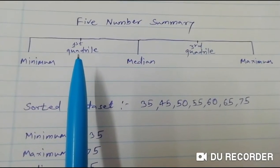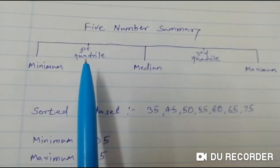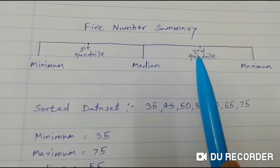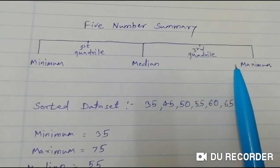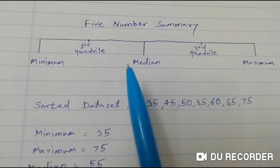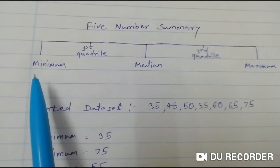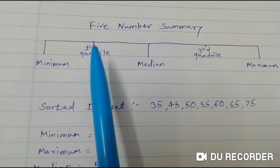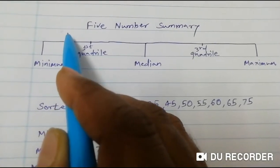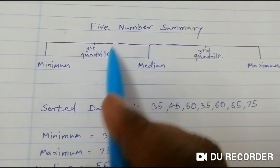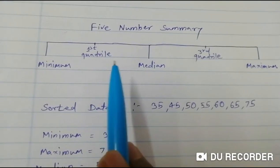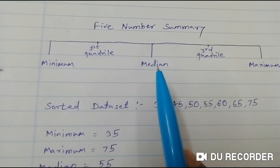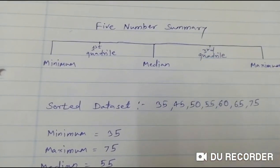The first quartile is nothing but the median of the minimum and median portions of the data. The third quartile is the median of the median and maximum portions. Our total data set is divided by the median into two 50% parts. Each 50% part is again divided, giving us 25% parts. So we calculate the median of the lower half for Q1, and the median of the upper half for Q3.